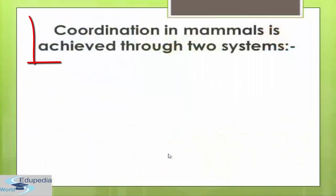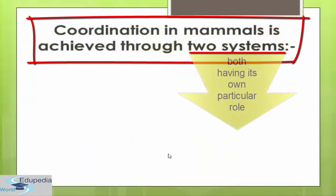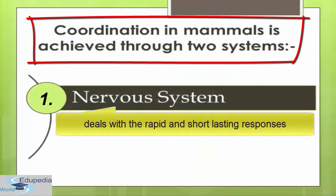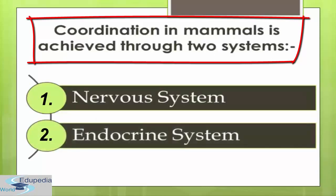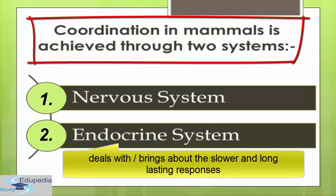Coordination in mammals is achieved through two systems, each with its own particular role. The first one is the nervous system that deals with rapid and short-lasting responses. Whereas the second one is the endocrine system that brings about slower, longer lasting responses.